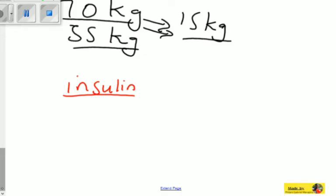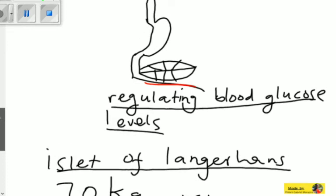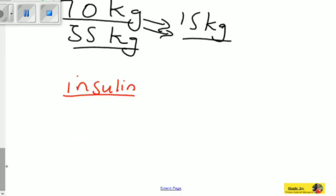The pancreas will release a hormone called insulin into the blood. Insulin is secreted by the cells of the Islets of Langerhans in the pancreas. This is all about the regulation or control of blood glucose levels. Insulin is the hormone which stimulates the liver to convert glucose into glycogen. When we talked about the fate of glucose, the excess glucose is stored in the liver as glycogen — and this is done through the hormone insulin.